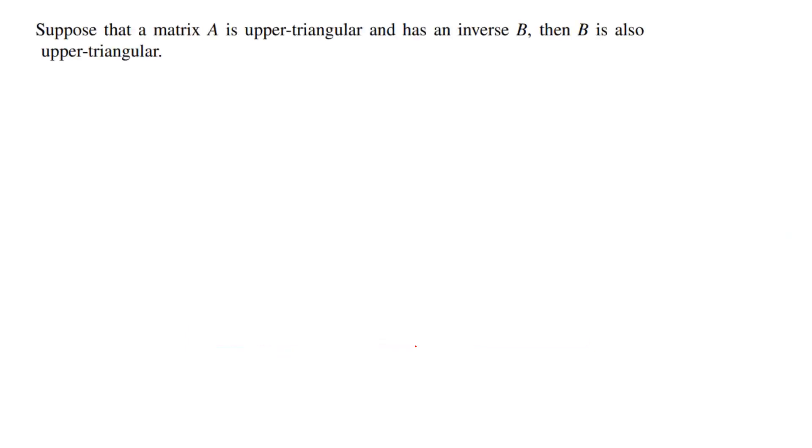Let's take a look at this lemma. Suppose that a matrix A is upper triangular and has an inverse B. Then B is also upper triangular.